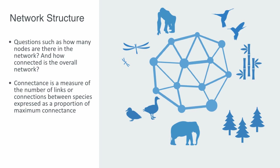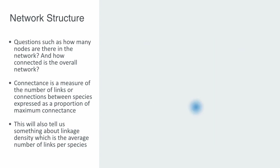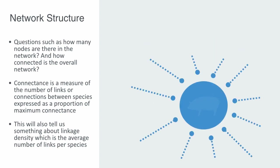Connectance also tells us something about linkage density, which is the average number of links per species. For any given creature, their degree can define how much of a generalist or specialist the species is within the food web — both in its role as a consumer and as a resource.